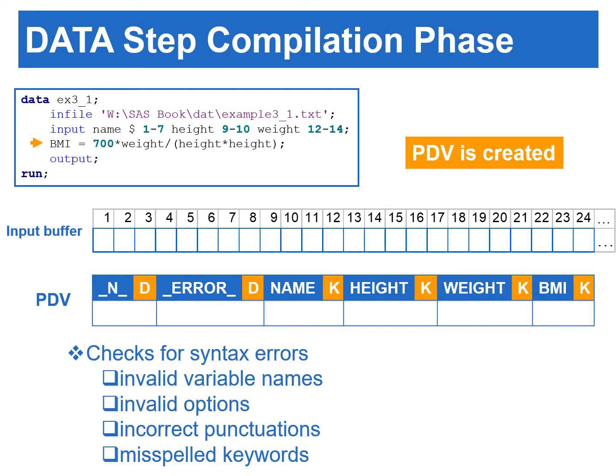During the compilation phase, SAS checks for syntax errors such as invalid variable names, options, punctuation, and misspelled keywords. SAS also identifies the type and length of newly created variables. At the end of the compilation phase, the descriptor portion of the SAS data set is created, which includes the data set name, the number of observations, and the number, names, and attributes of variables.